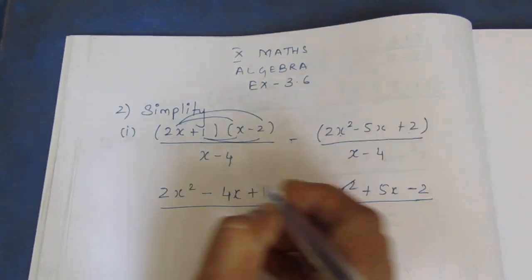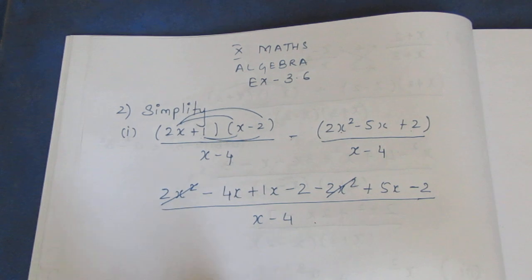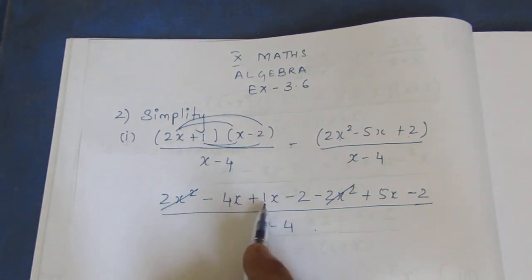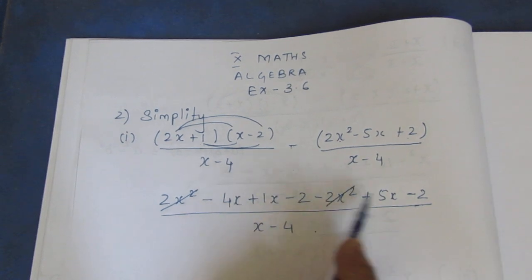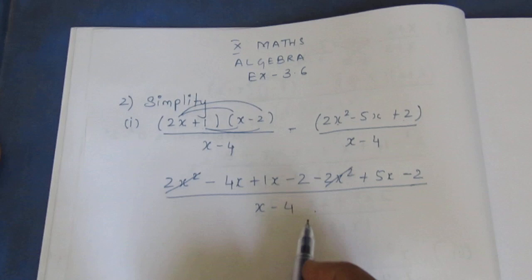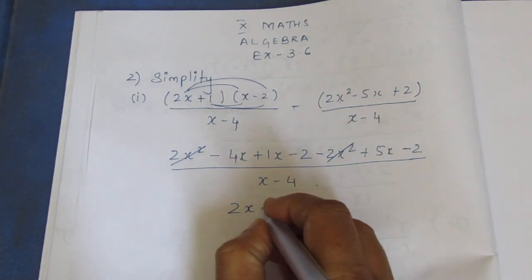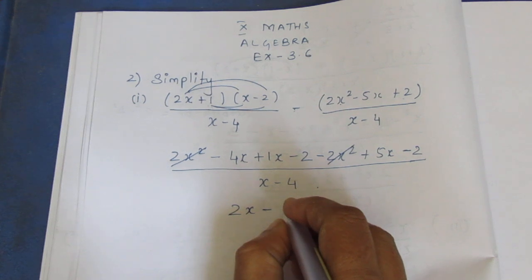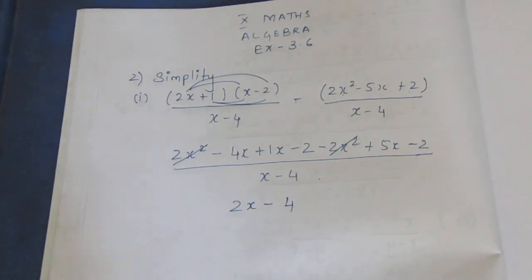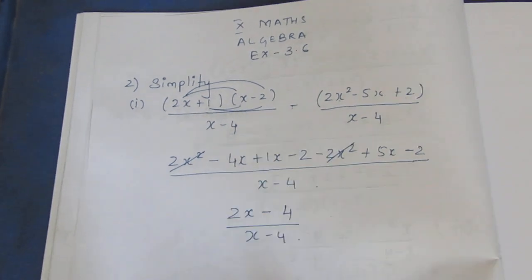Like terms: minus 2x squared plus 2x squared cancel. For the x terms: plus 6x minus 4x gives 2x. So the result is 2x minus 4, by x minus 4.